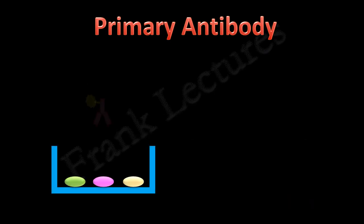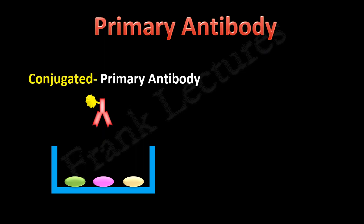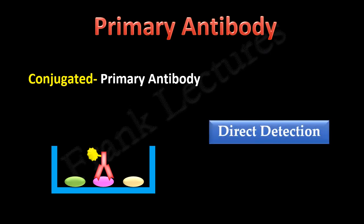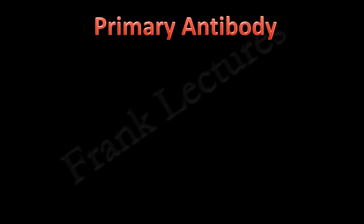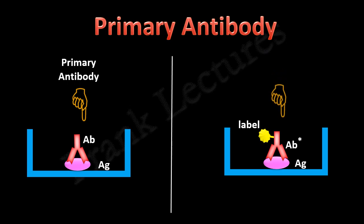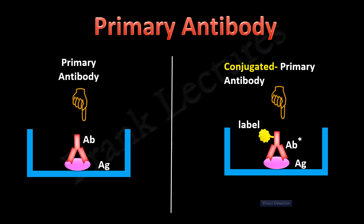If an enzyme or other label is covalently attached to the primary antibody, it is known as a conjugated primary antibody. And when an antigen or protein of interest is detected by a conjugated primary antibody, the type of detection is known as direct detection. This is because the labeled antibody is directly binding to the target antigen. So, an antibody which directly binds to its target antigen is known as a primary antibody, and when this antibody is conjugated to an enzyme or other label, it is known as a conjugated primary antibody. Detection assays involving conjugated primary antibodies are known as direct detection assays.